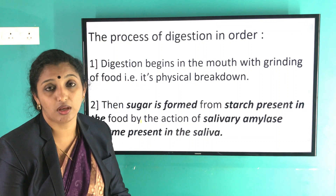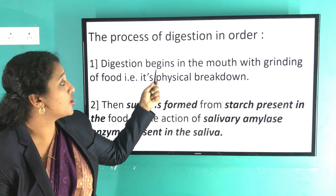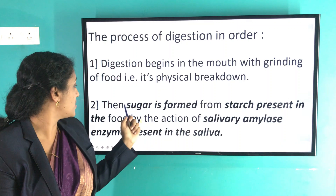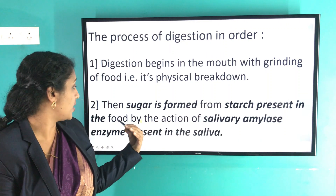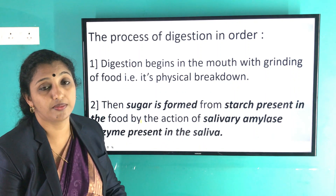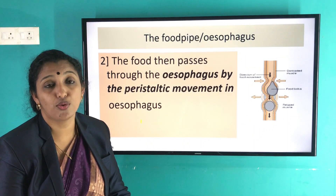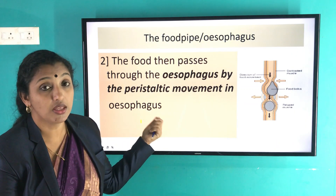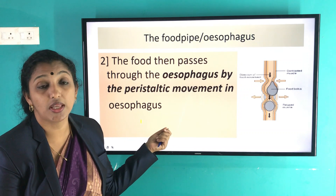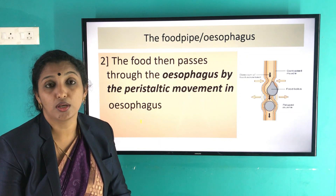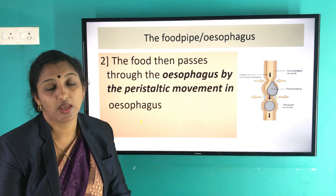To summarize what happens in our mouth: first, digestion begins with the grinding of food, which is its physical breakdown. Second, sugar is formed from starch present in food by the action of salivary amylase enzyme in the saliva. After digestion in the mouth, the swallowed food passes through the esophagus or food pipe by peristaltic movement, pushing the food downwards into the stomach. We will study that in the next class. That's enough for today. Thank you.